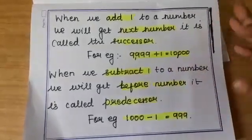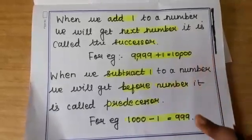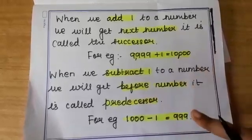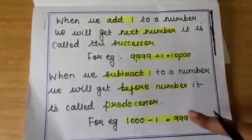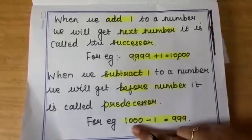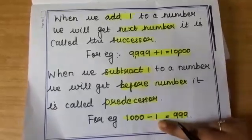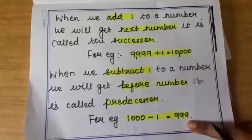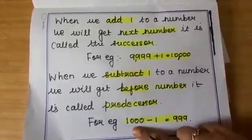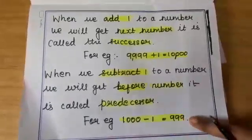In the same way, when you subtract 1 from the number, you will get its predecessor. So when we subtract a number, we will get the before number or the previous number. That is its predecessor. So here I have taken one example, 1,000. So 1,000 minus 1 is 999. This is the predecessor of 1,000. Predecessor of 1,000 is 999.